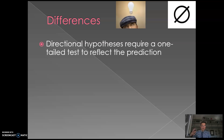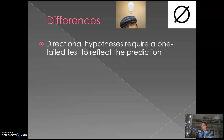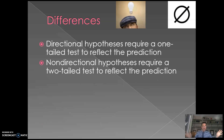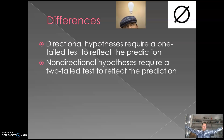Directional hypotheses require a one-tailed test — you're only looking in one direction for the answer. If the right answer comes from the other direction, you're not even looking there. By contrast, a non-directional hypothesis uses a two-tailed test because you're not sure which direction the answer will come from — it could come from either side — so you're examining both ends of the spectrum.